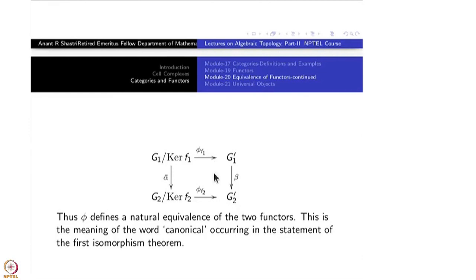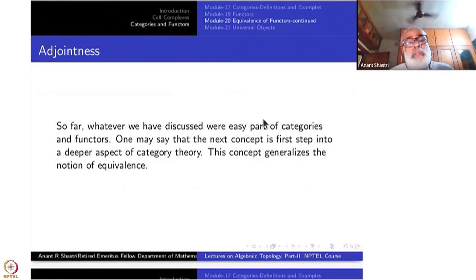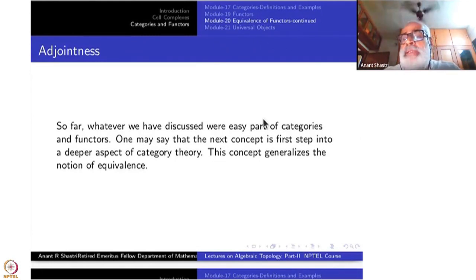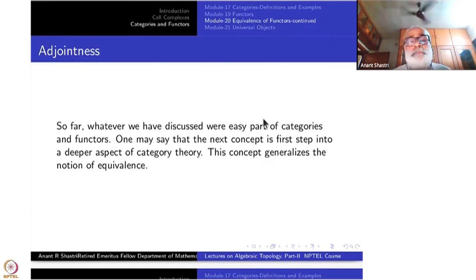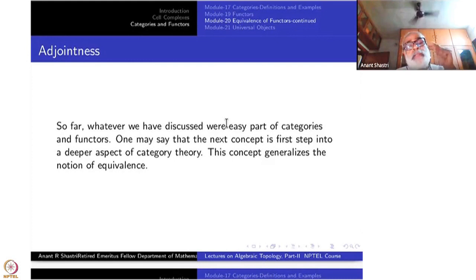I hope this explains the canonical isomorphism in ordinary group theory that you have studied. Now let me introduce one of the first deep results in category theory. So far whatever we have done are all easy parts. This is the first deep step you are taking in category theory. We are not going to go much further — just a little bit on adjointness and then we stop. I would say that adjointness is the starting point of serious category theory.